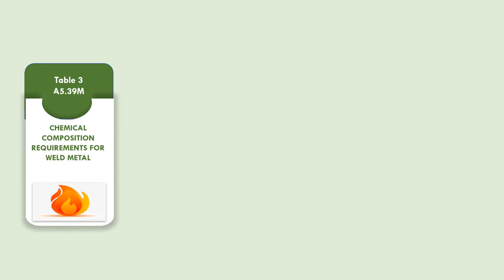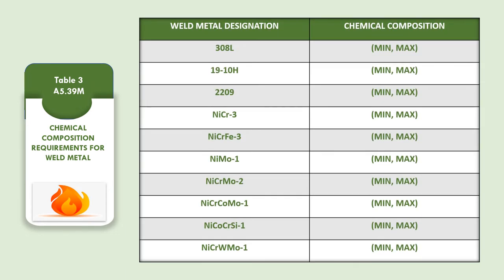Table 3 gives details about chemical composition requirements for weld metal. Against each weld metal designator, for each specific element, there is a weight percentage with minimum and maximum requirements which must be fulfilled.